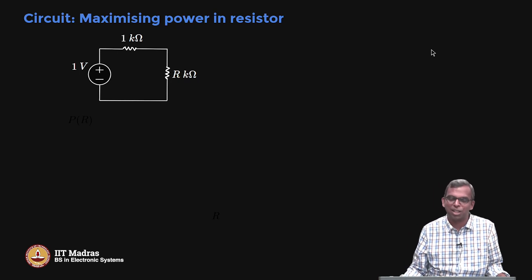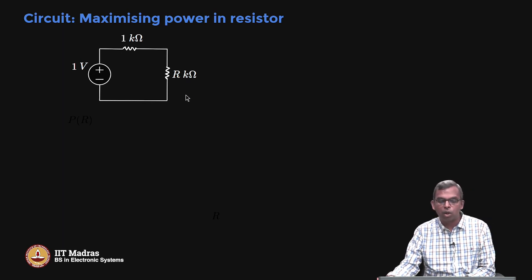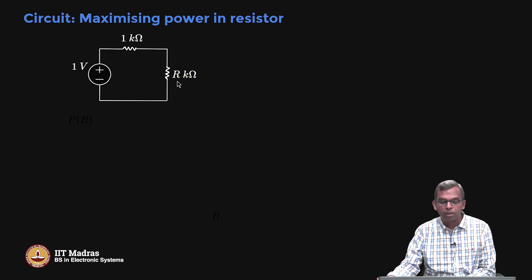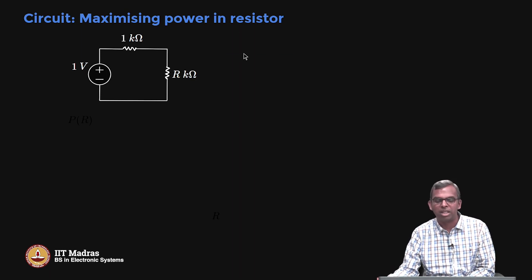Here is one more problem from electrical circuits. A 1-volt battery is connected to two resistors in series: a 1 kΩ fixed resistor and an unknown r kΩ resistor. We want to choose r to maximize the power through r. If r = 0, power is 0; if r → ∞ (open circuit), power is also 0. So power peaks somewhere in the middle — it is reasonable to maximize it.